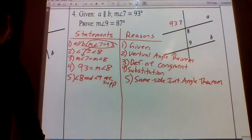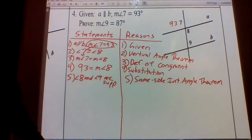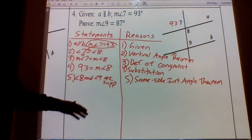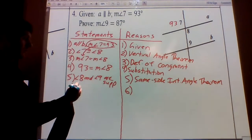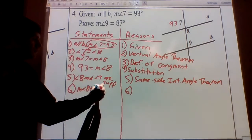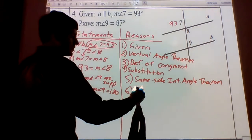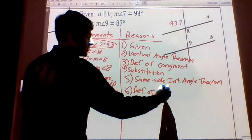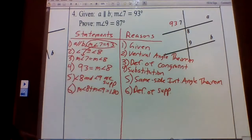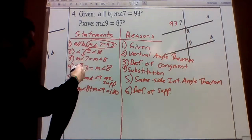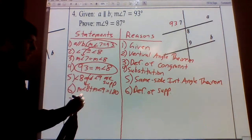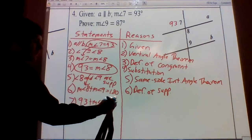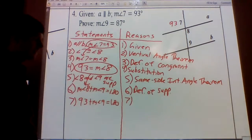This does not tell us the angles add up to 180 or that the measures are equal. All it says — given the lines are parallel — is that the same-side interior angles are supplementary. But we know what supplementary means: the angle measures add up to 180. So the measure of angle eight plus the measure of angle nine equals 180 — that's our definition of supplementary. We already know the measure of angle eight is 93, so we substitute that in: 93 plus the measure of angle nine equals 180, by substitution.